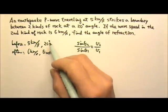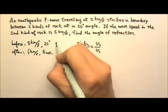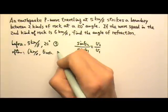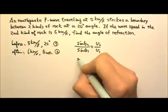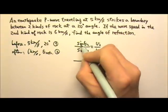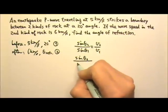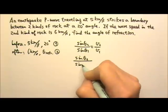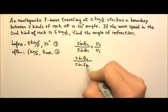It doesn't matter which one we use for 1 or 2, but let's say if we use 1 for the before and 2 for the after, then sine theta 2, the theta 2 is the angle we're looking for, and then we have sine theta 1, that's 20 degrees.